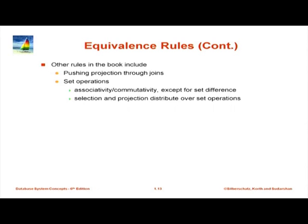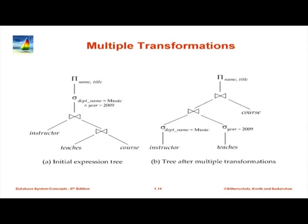These are the most important rules: commutativity, associativity, pushing selections. The others are in some sense secondary. If you do this, you can handle many queries. There are also rules on pushing projections through joins, equivalence and associativity for set union and intersection, commutativity for these, set difference is more restricted, and then some other rules. There are also rules on aggregates — when you can push selections through aggregates and so forth. Bottom line: there are many equivalence rules which we can use to generate equivalent expressions.